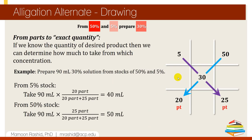Now let's solve a problem where we move from parts to actual quantity. From this example, we need 25 parts from the 50% concentration and 20 parts from the 5% concentration. Say we need to make 90 ml of this 30% solution. The amount to take from the 5% stock is 20 parts over total parts (45 parts), multiplied by 90 ml, which gives 40 ml. Similarly, take 50 ml from the higher concentration stock. Alternatively, subtract 40 ml from 90 ml to get the remaining 50 ml needed.